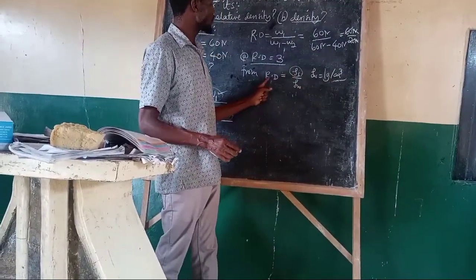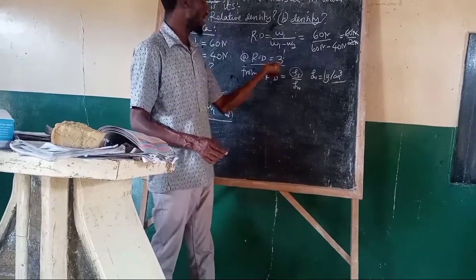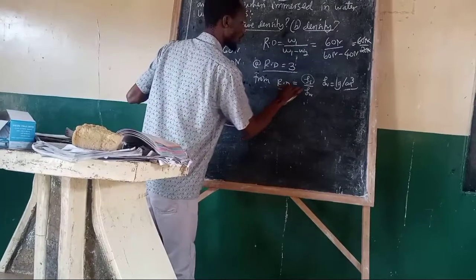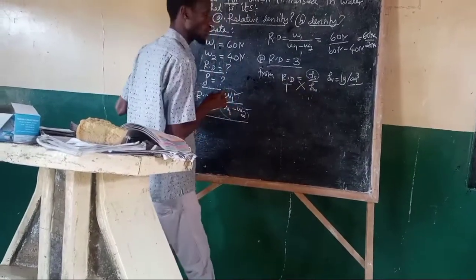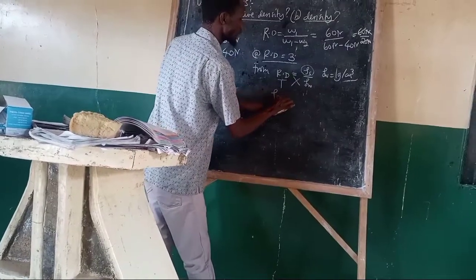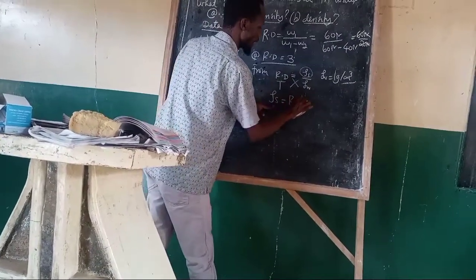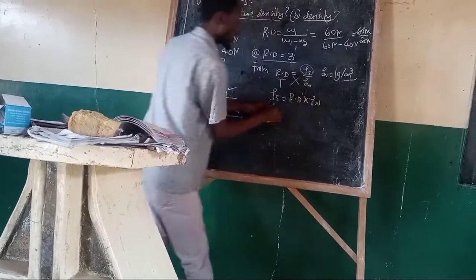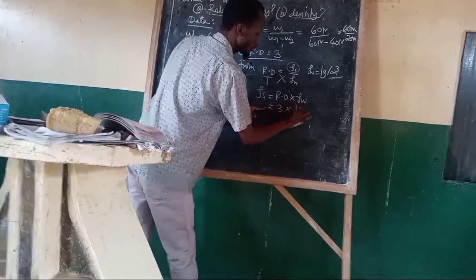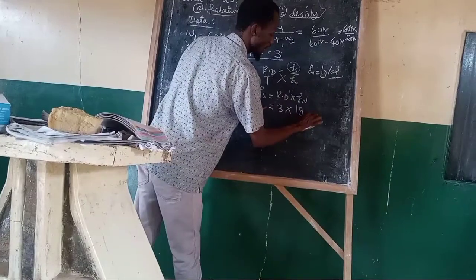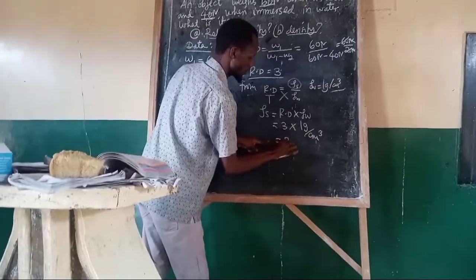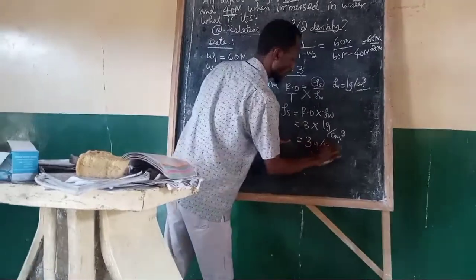Since we already have the relative density and density of water is constant, we substitute what is missing using cross multiplication. Density of substance is equal to relative density times density of water, which is 3 times 1 gram per centimeter cubed. Therefore, density of substance is 3 grams per centimeter cubed.